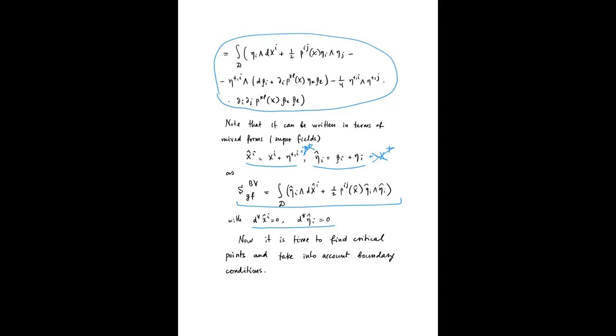Now it's time to find the critical points and take into account boundary conditions. In this next part of the lecture, I'll continue essentially the overview of the paper by Cattaneo and Felder on the Kontsevich star product. And then at the end, we will see how it works for transition amplitudes in topological quantum mechanics. That's the end of lecture 3a.